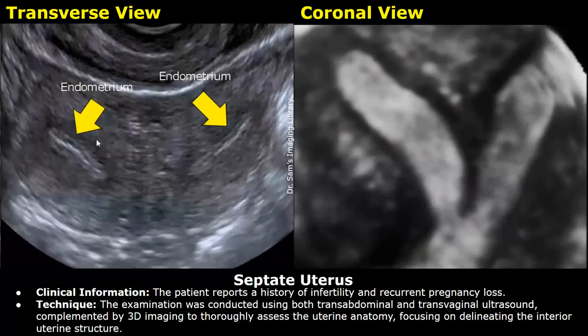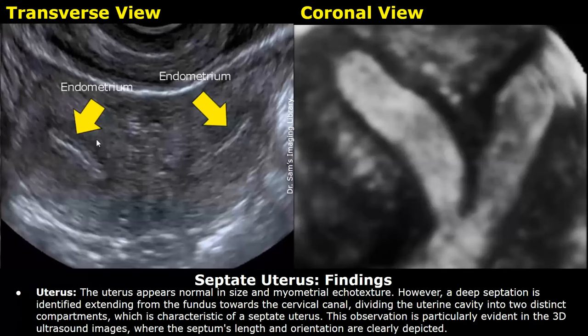This is a report for septate uterus. Clinical information: the patient reports a history of infertility and recurrent pregnancy loss. Technique includes standard and 3D ultrasound. These are the findings: the uterus appears normal in size and myometrial echo texture; however, a deep septation is identified extending from the fundus towards the cervical canal, dividing the uterine cavity into two distinct compartments, which is characteristic of a septate uterus.